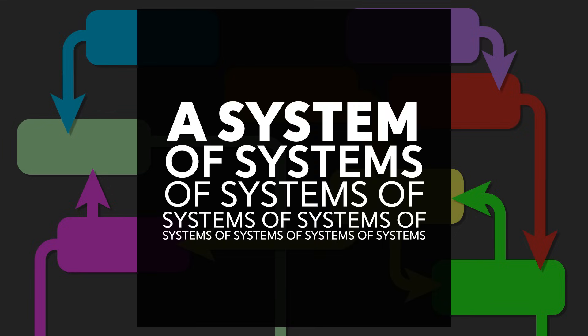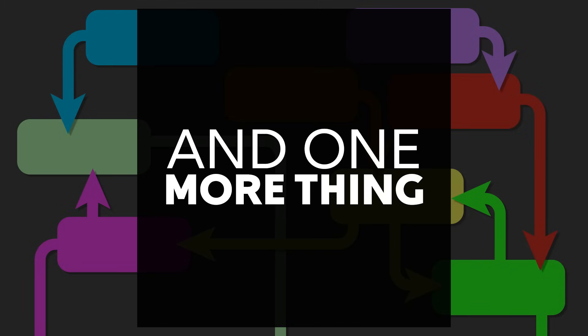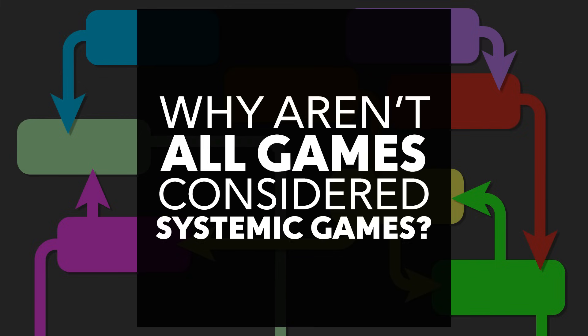As something that can be described as a collection of itself, the meta-nature of systems makes a strict definition even harder to pin down. But these common examples also give rise to another question. If all games use systems, why aren't all games considered systemic games? This is the real question, and probably the more important question from a game design standpoint.